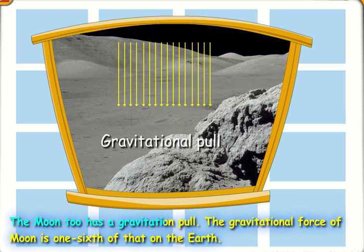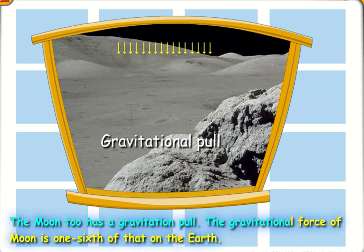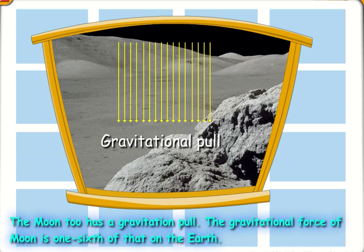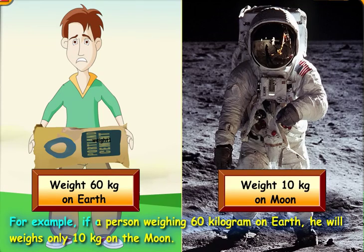The moon too has gravitational pull. The gravitational force of the moon is one-sixth that on the Earth. For example, if a person weighing 60 kilograms on Earth, he will weigh only 10 kilograms on the moon.